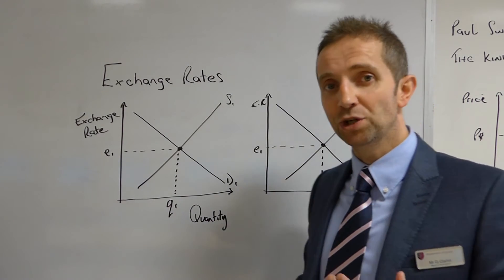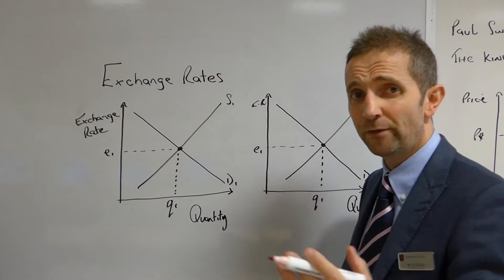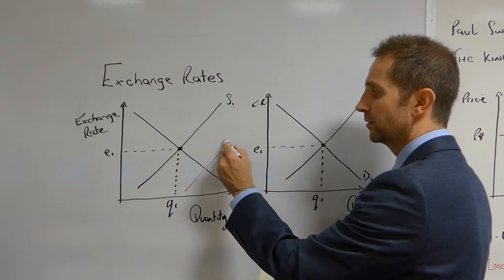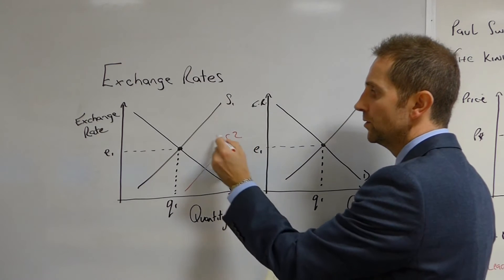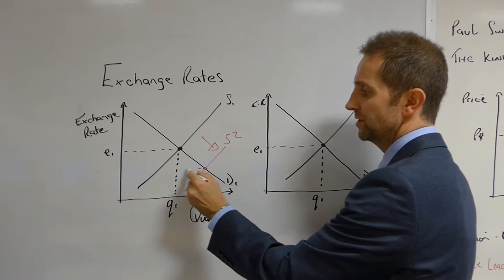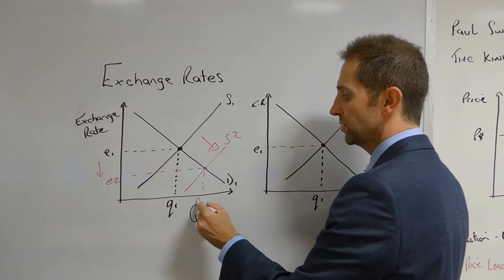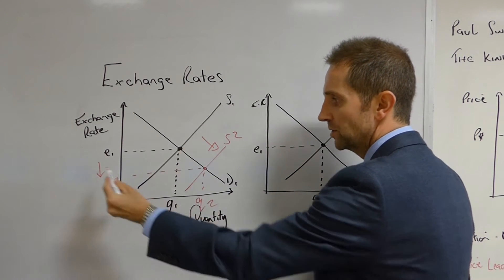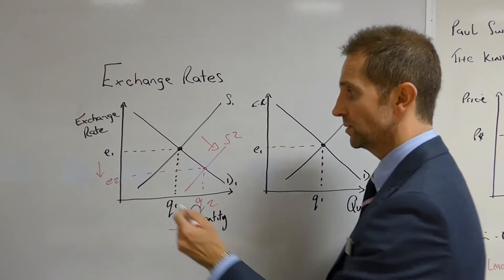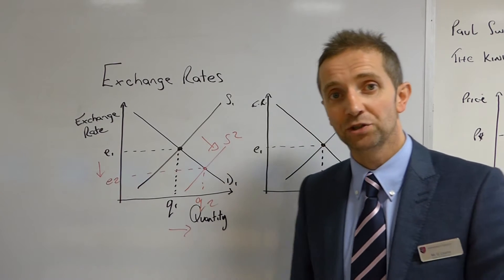People would obviously been ditching the currency, and as a consequence of that, as people sell off the currency, you'll be aware I'm sure that this would shift the supply curve of the currency from S1 to S2. And as a consequence of that, the country or countries concerned would experience, always good to put your direction of travel on your diagrams, the countries would experience a movement from E1 to E2 in the value of their exchange rate.